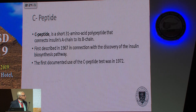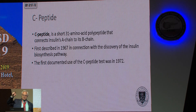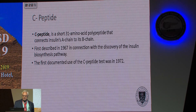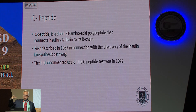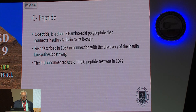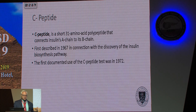C-peptide is a 31 amino acid peptide hormone that connects the insulin alpha and beta chain. It was first discovered around 1967 when researchers looked at how insulin was metabolized. Insulin comes from pre-proinsulin to proinsulin, and proinsulin has two molecules with a C-peptide that gets cut off to yield insulin. About five years later, people started checking this to understand how much insulin is present.